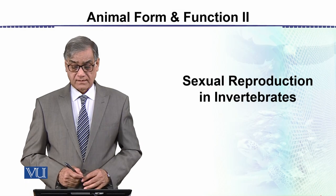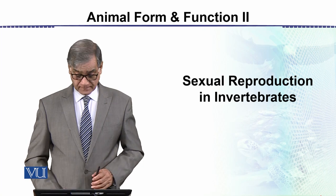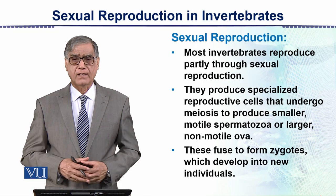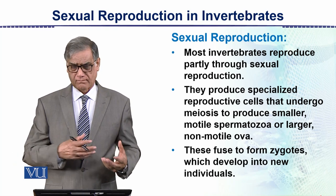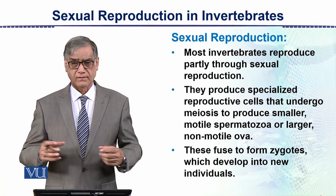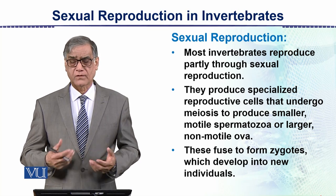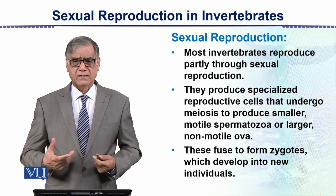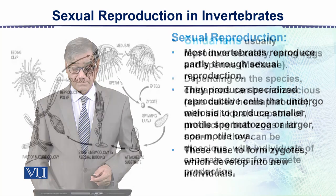Next topic is the sexual reproduction in invertebrates. In sexual reproduction, we are familiar with two individuals. One of the parents produces sperms and eggs. There is fertilization and then the zygote forms which becomes deployed. This is material production which we have previously covered in the same modules.